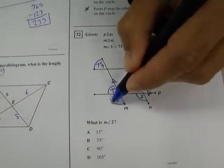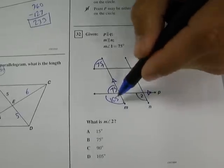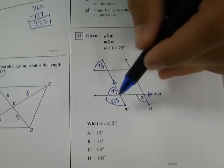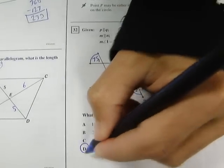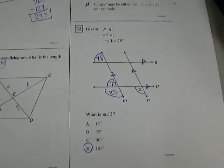Now look at the relationship we have here. We have the 105 here and we have two here. These are also corresponding angles. Corresponding angles have to be congruent. Therefore, two has to be congruent to this angle. Measure of angle two is 105 degrees. That is D.